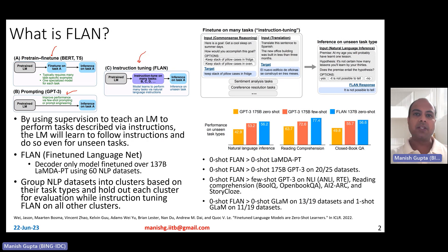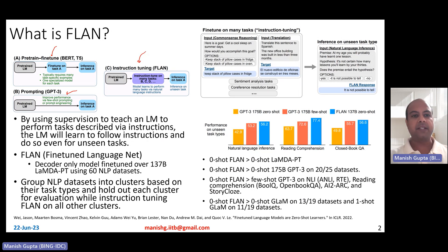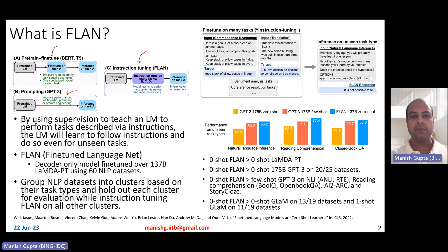In prompting-based models like GPT-3, the idea is to pre-train a language model and then do inference on as many tasks as you like. So the idea here is to build a generalist model, and the idea is to improve performance via few-shot prompting, using prompt engineering at runtime, at inference time.